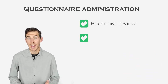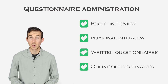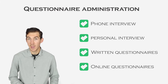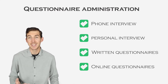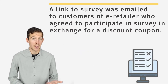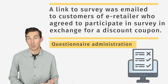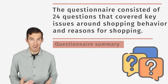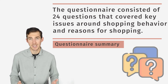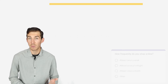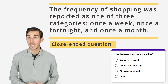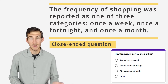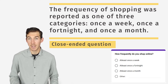Now you have to explain how the questionnaire will be administered. There are many different ways: via a phone interview, personal interview, written questionnaire, or online questionnaire. All the methods have both advantages and disadvantages. In our case, we used an online questionnaire that was emailed to the customers who agreed to participate. Let's explain the number of questions the survey contains — in our case, we had 24 questions covering various topics. Here, we are reporting the frequency of shopping in three categories: once a week, once a fortnight, and once a month. This is a close-ended question since the answers are limited to a fixed set of responses, and the participants must choose one of them.